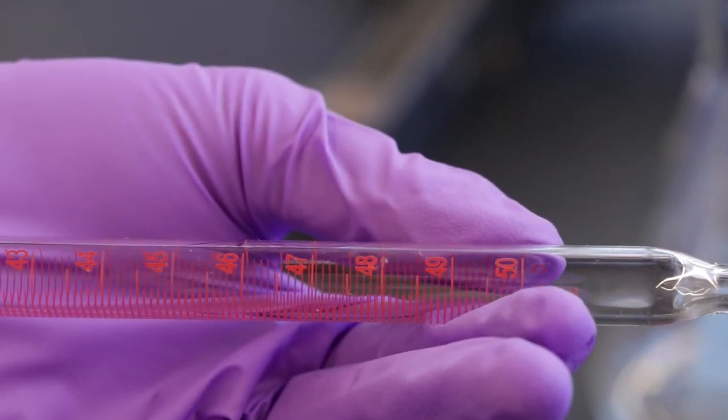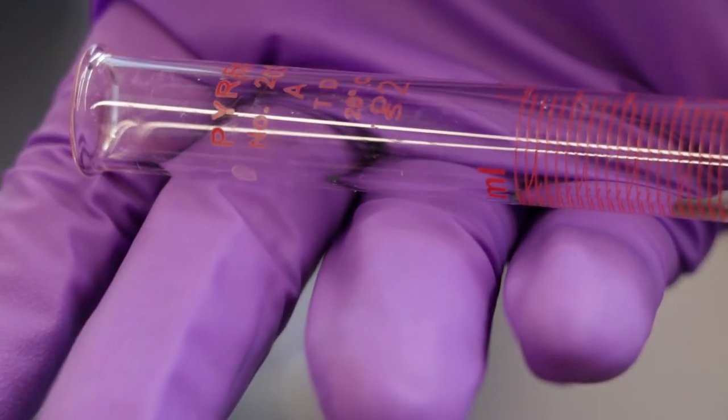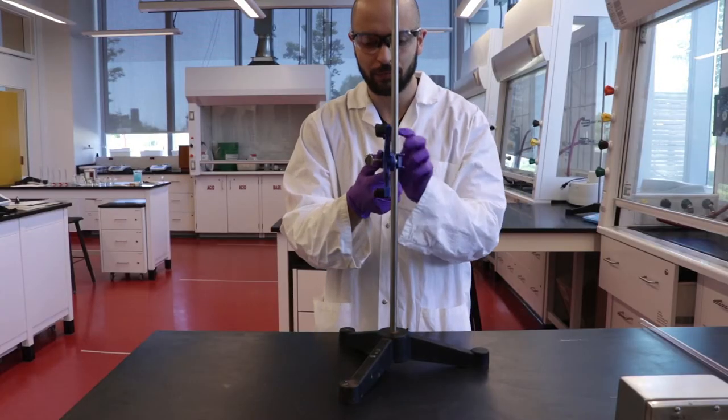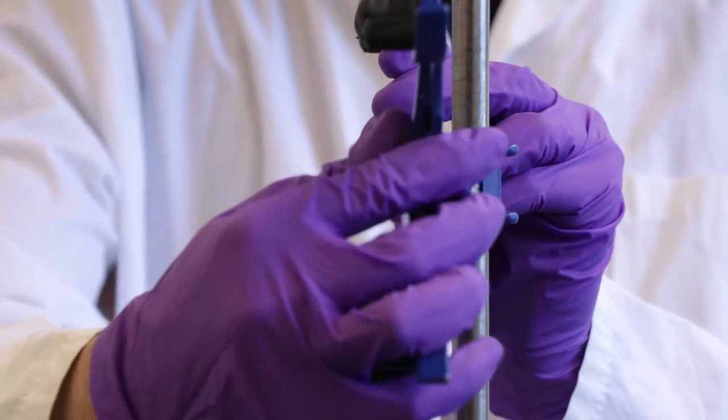In our labs we use Class A burettes which are accurate to the nearest 0.05 milliliter. They could be made of either glass or plastic. Before performing a titration, ensure your burette is clean to avoid contamination.